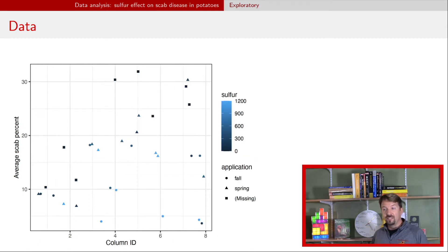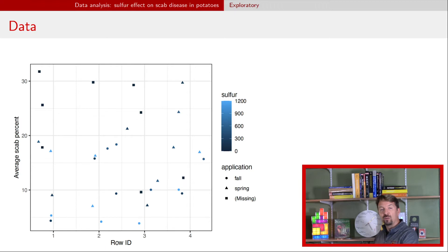If we wanted to look at this spatially, we can look at the scab percent versus the column ID. And now we have color representing the amount of sulfur, and we have the shape representing the application type. And we can see here, well, maybe there's sort of an increasing pattern, or maybe it goes up and it comes back down. So we'll come back to that later. But you do the same thing for rows, but this time, we don't really see much going on here at all.